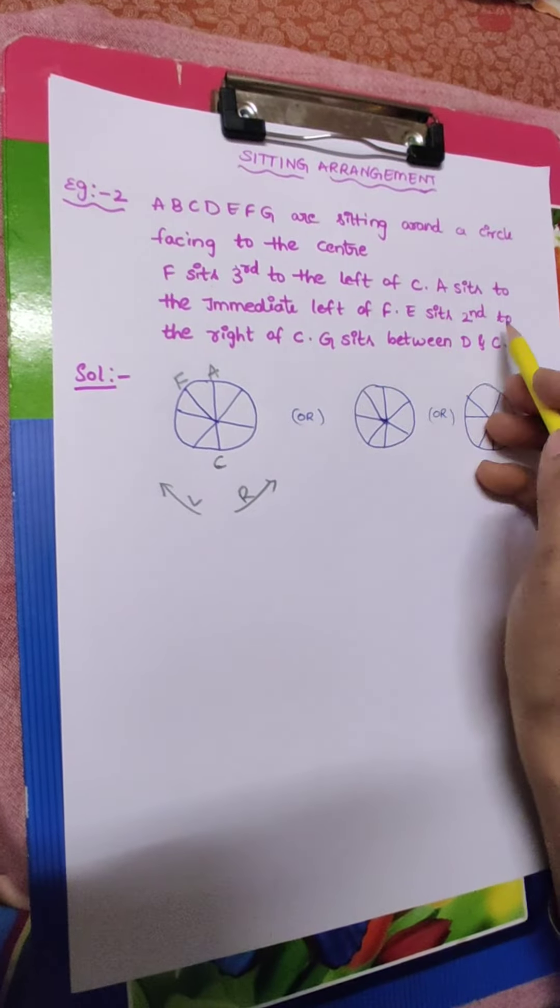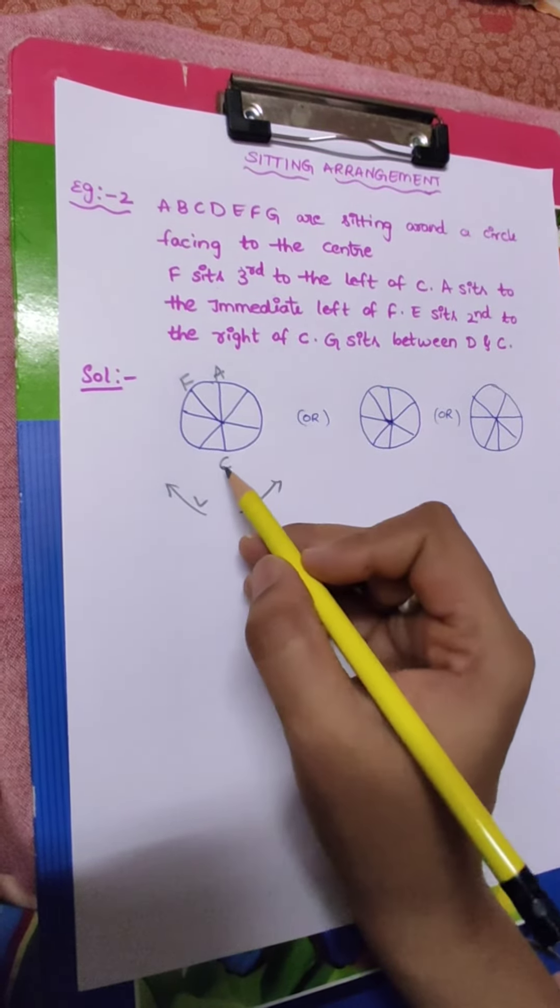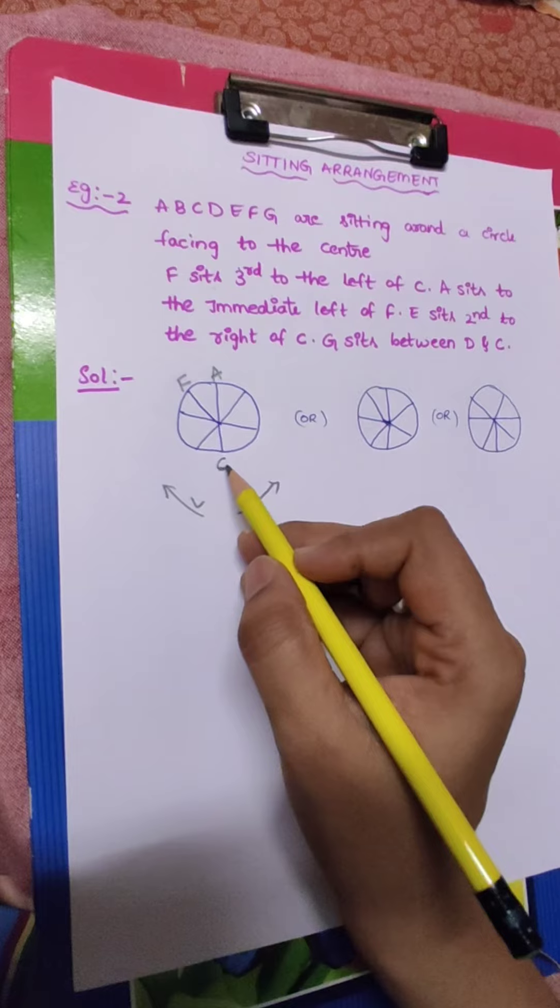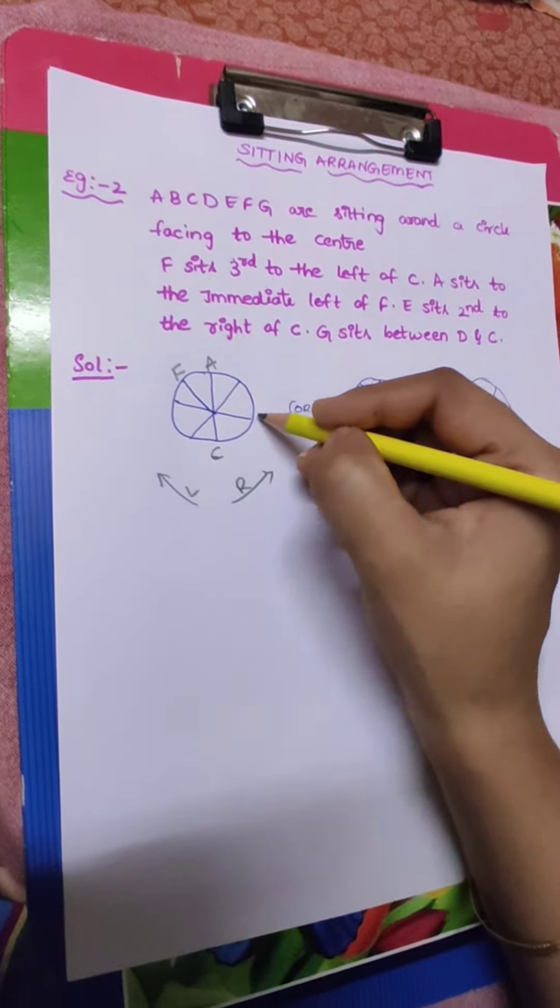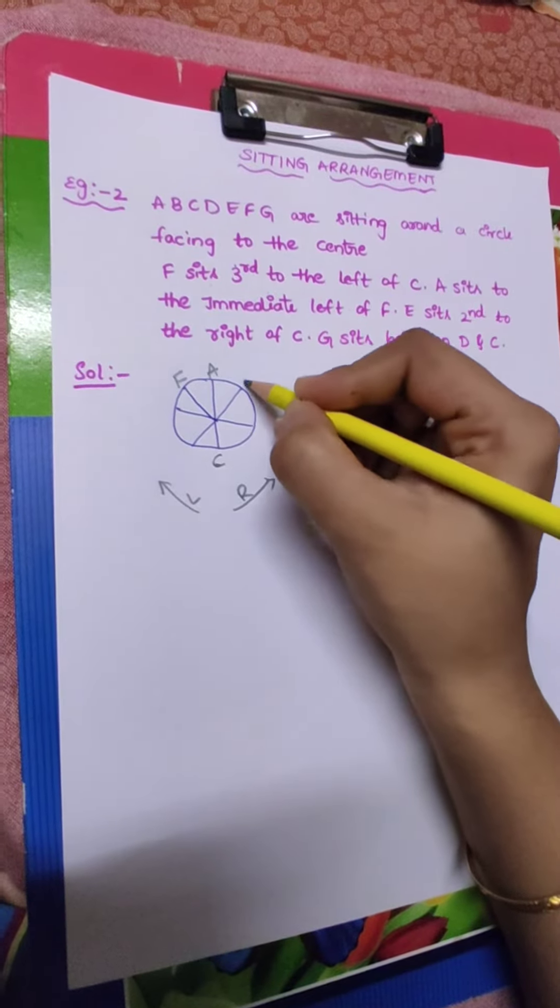Next, E sits second to the right of C. C already we know. E sits second to the right of C - first right, second right. So which person? E.